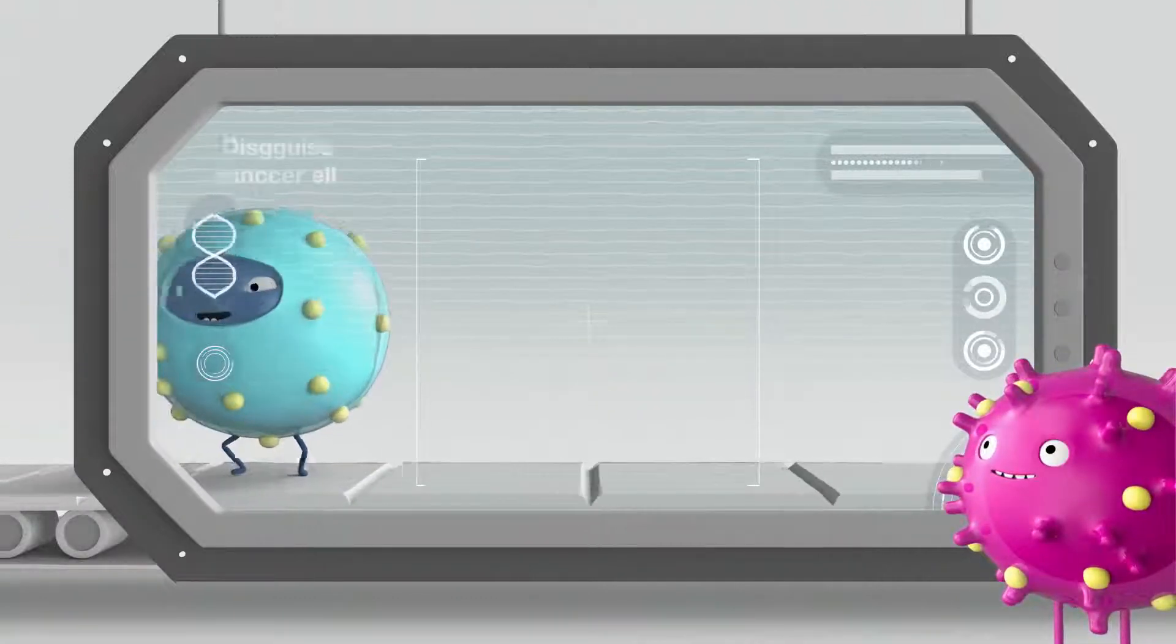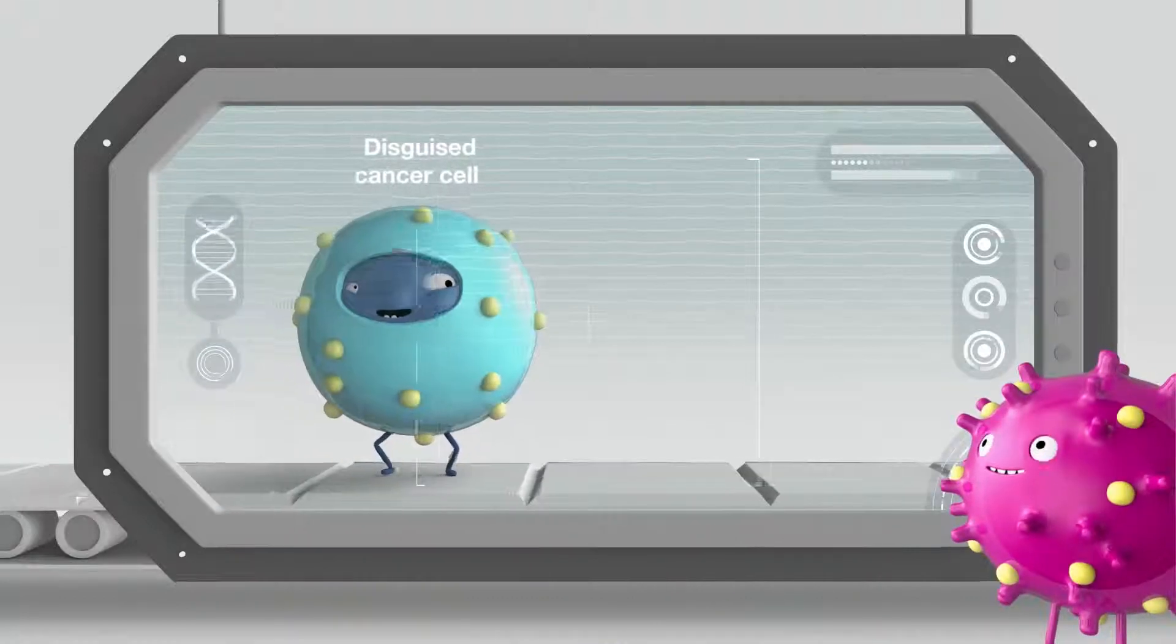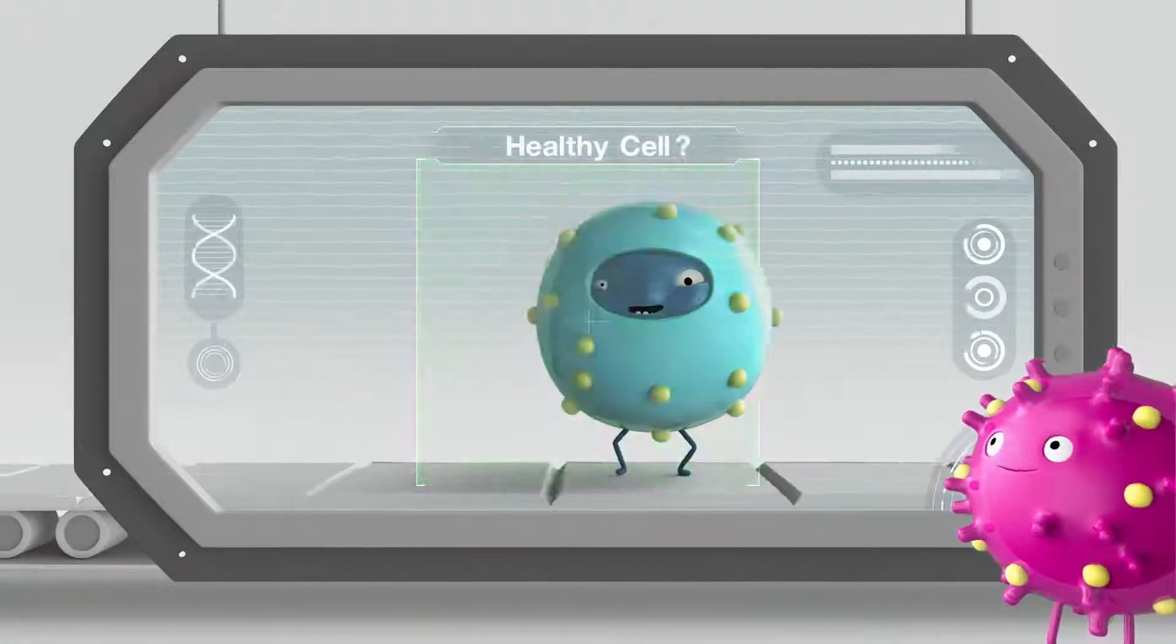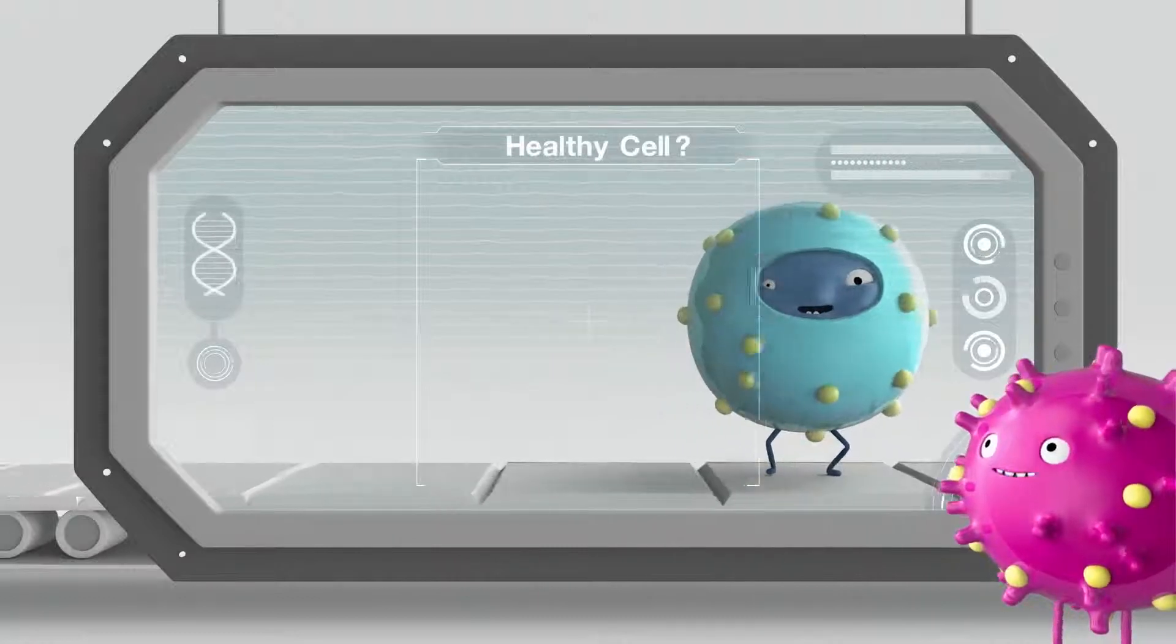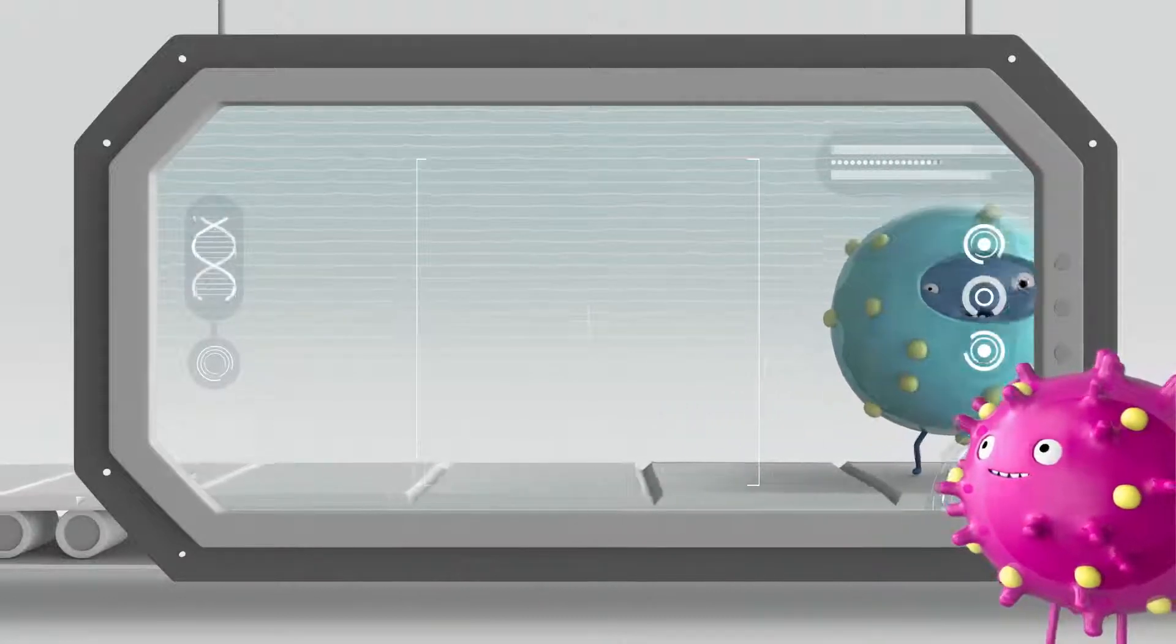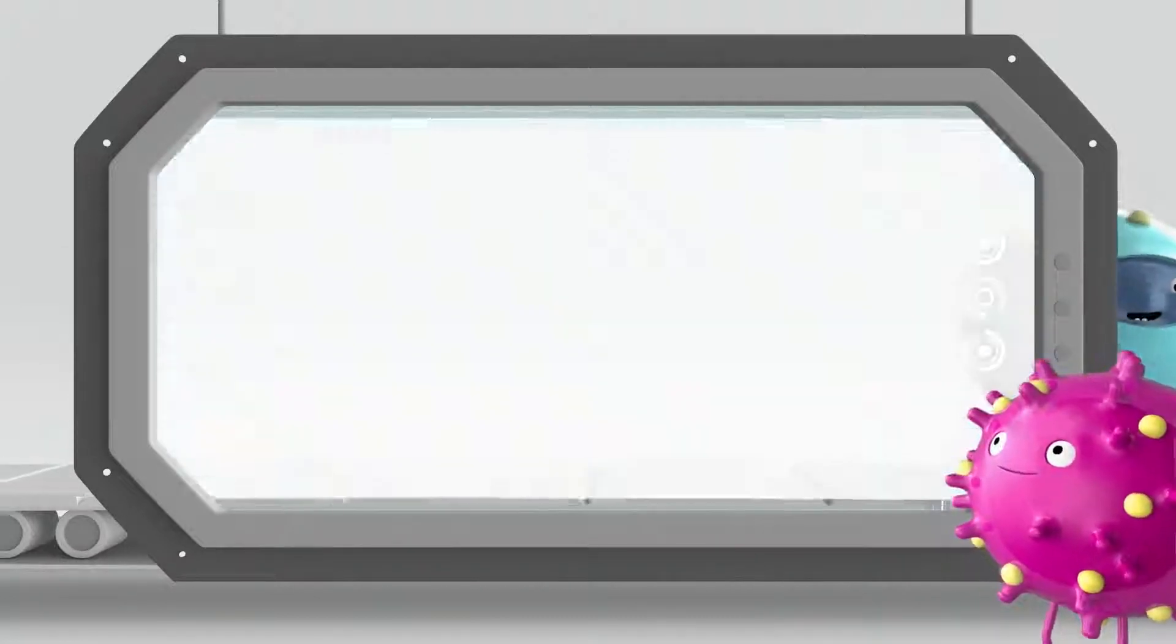Unfortunately, some cancer cells are smart and can use these same checkpoints to their own advantage. This allows cancer cells to hide from your immune system and avoid being destroyed.